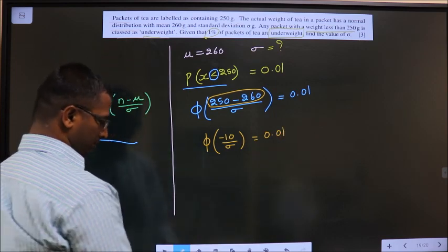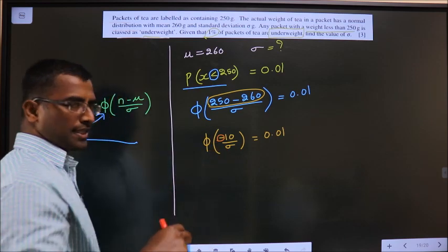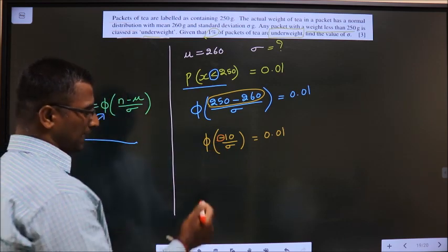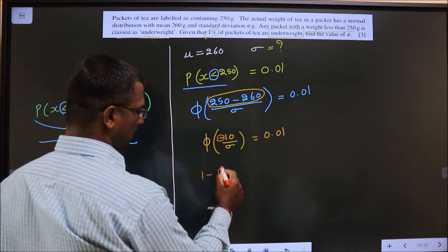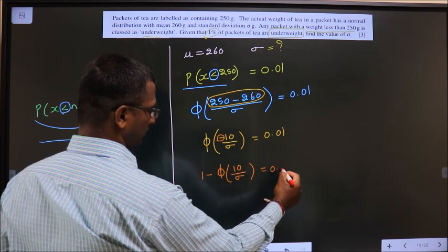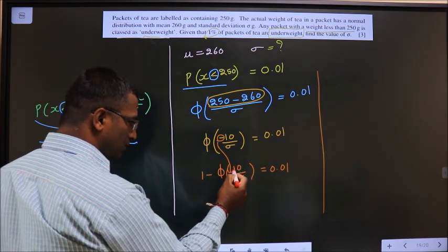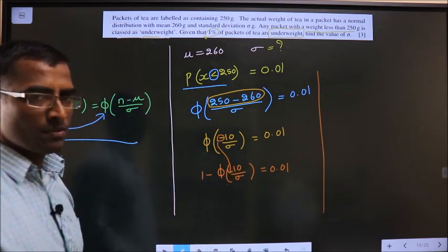How do you make this negative into positive? For that we should do 1 minus. 1 minus φ of 10 by standard deviation to make this into positive.